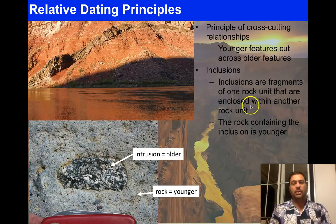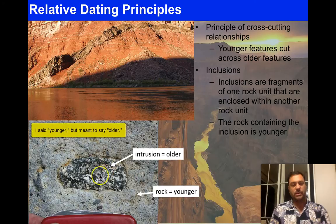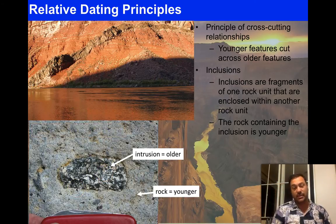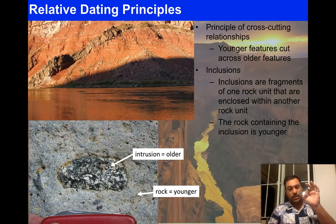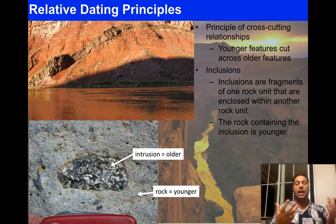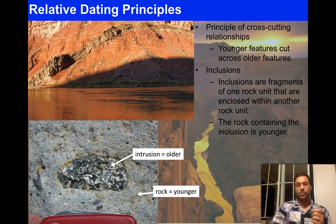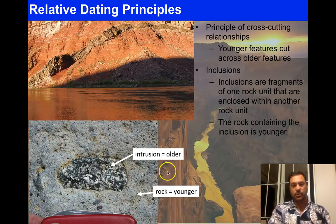Inclusions are fragments of one rock unit enclosed within another rock unit. Here we see an igneous rock with a piece of rock stuck inside it — that included fragment is actually older. This is common: sandstones, conglomerates, and breccias contain little pieces of older rock now enclosed in a younger rock. In this case, a volcano erupting grabs a piece of country rock or sidewall rock and carries it up. So the rock containing the inclusion is younger; the inclusion itself must be older, because it had to exist before it could be incorporated.